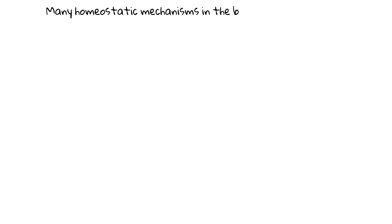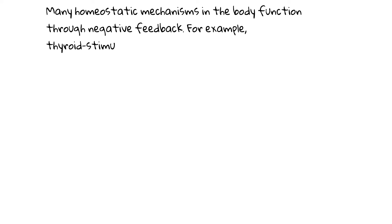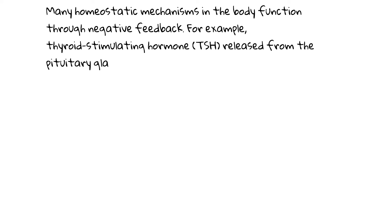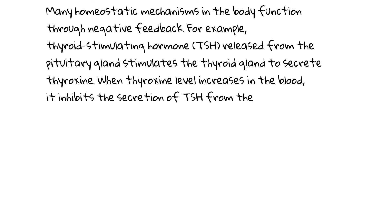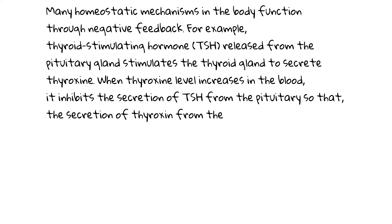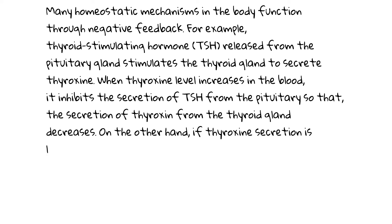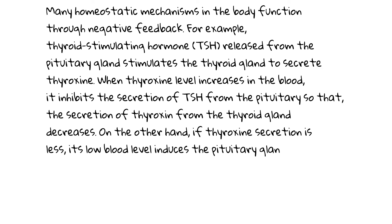Many homeostatic mechanisms in the body function through negative feedback. For example, thyroid stimulating hormone, TSH, released from the pituitary gland stimulates the thyroid gland to secrete thyroxine. When thyroxine level increases in the blood, it inhibits the secretion of TSH from the pituitary so that the secretion of thyroxine from the thyroid gland decreases.